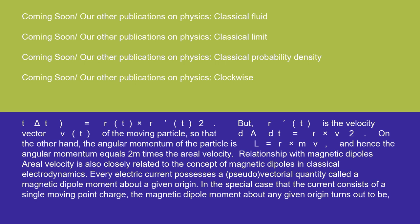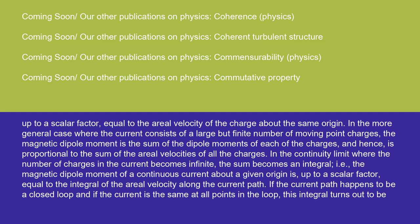Relationship with magnetic dipoles: aerial velocity is also closely related to the concept of magnetic dipoles in classical electrodynamics. Every electric current possesses a pseudo-vectorial quantity called a magnetic dipole moment about a given origin. In the special case that the current consists of a single moving point charge, the magnetic dipole moment about any given origin turns out to be up to a scalar factor equal to the aerial velocity of the charge about the same origin.